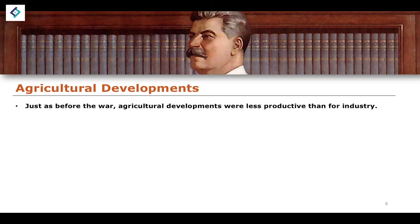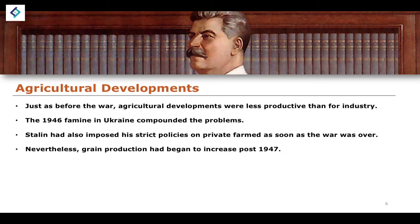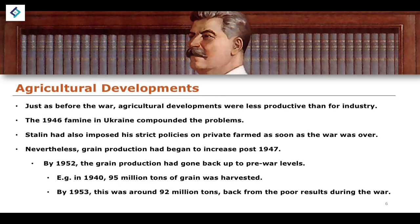In terms of agricultural developments, just before the war the agriculture sector was less productive than industry — owing to famines, the relative failure of collectivization, and Stalin placing greater emphasis on industry over agriculture. In 1946, a famine in Ukraine compounded a number of problems, and Stalin imposed strict policies on farmers and private farms as soon as the war was over. However, after 1947 we do see an increase in grain production. In 1940, before the war, 95 million tons of grain were harvested, and by 1953 this had recovered to around 92 million tons.